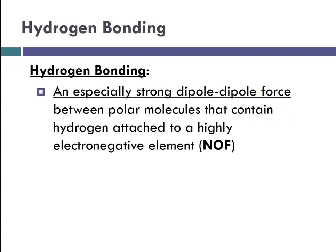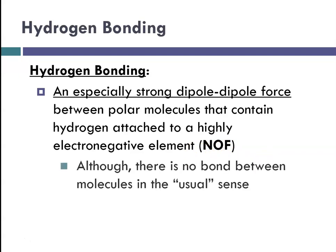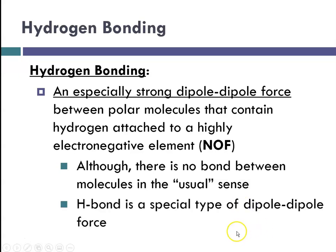Hydrogen bonding is the strongest of the dipole-dipole forces. It occurs between polar molecules that contain hydrogen attached to a highly electronegative element — we say NOF, meaning nitrogen, oxygen, or fluorine. Those are where hydrogen bonds tend to form. Although there is no bond between molecules in the usual sense, hydrogen bonding is a strong force, and it is a special type of dipole-dipole interaction.